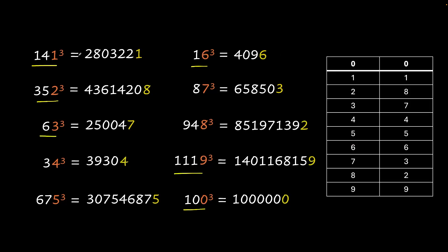If you noticed these numbers are exactly the same as the one we had before. For 0 we end with 0. See 100 cube ends with a 0. For 1 we end with a 1. 141 cube ends with a 1. For 2 we end with 8. 352 cube ends with an 8. We don't really mind what these other digits are. We just need to know what the unit's digit is. And if you verify all these numbers you see that the table remains exactly the same as we had before. That's very fascinating.